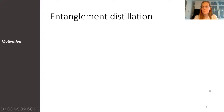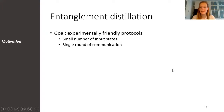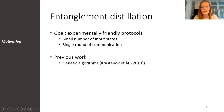Now suppose that we want to find good distillation protocols. In particular, we are looking for protocols that are experimentally friendly — that is, protocols that use only a small number of states in the input and require only a single round of communication between Alice and Bob. Apparently, any valid unitary operation on Alice or Bob's side could give a good protocol. So how do we explore the space of protocols and find the optimal ones for a desired metric?